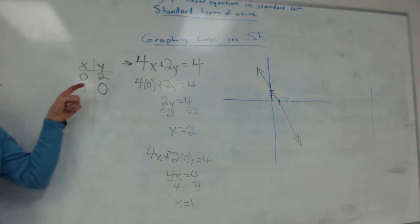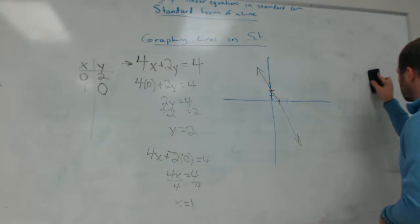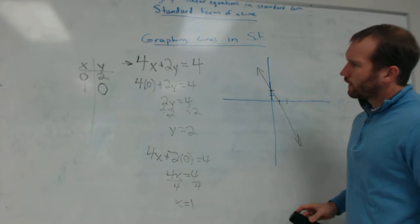So here's the key. Make a T-chart. Choose 0 for X. Choose 0 for Y.